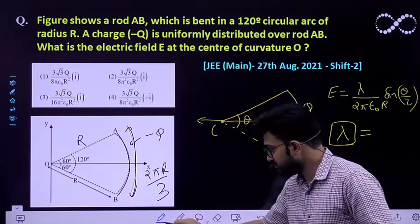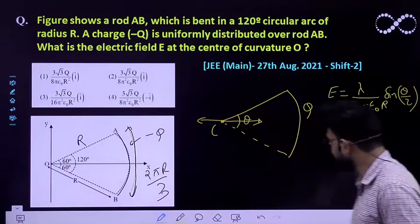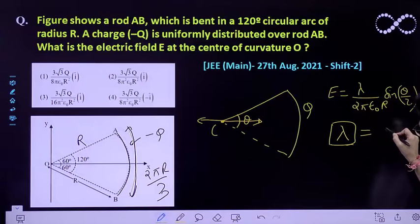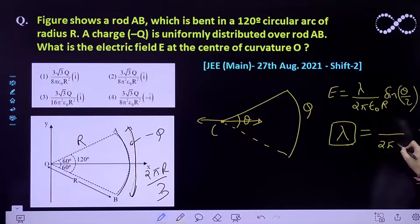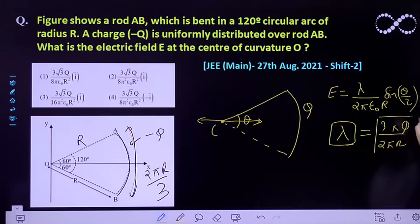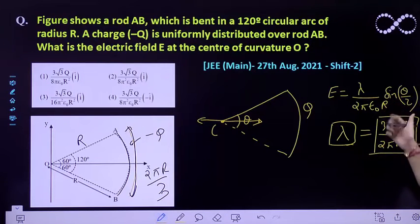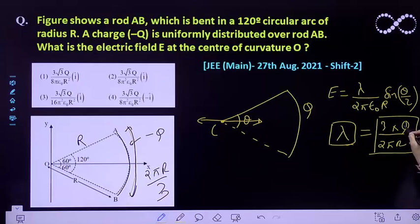So the charge distribution and linear charge density will be Q divided by 2 pi R by 3, which is 3Q by 2 pi R. This is the linear charge density that you must get, charge per unit length. So this much of length acquires a charge of this, so 1 meter length will acquire this much of charge.